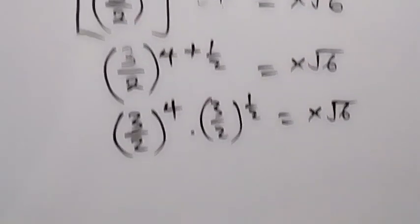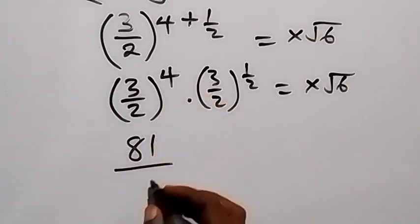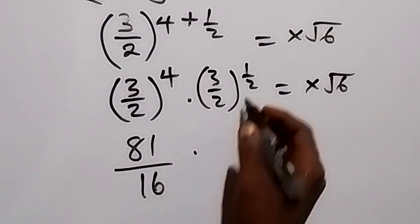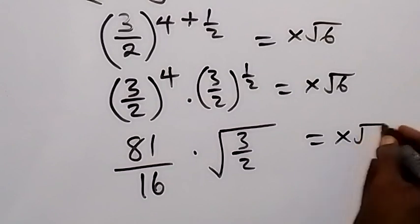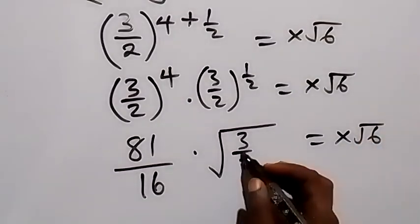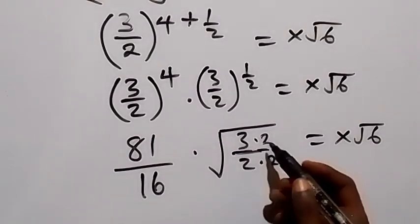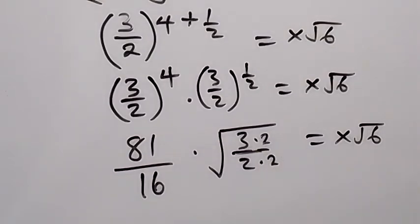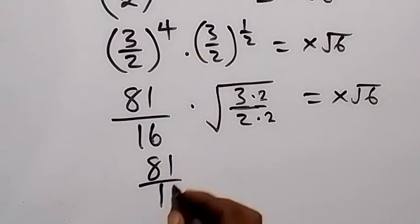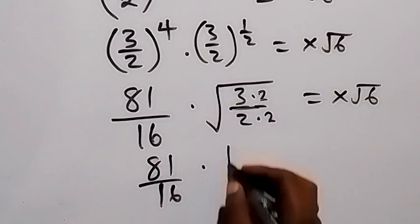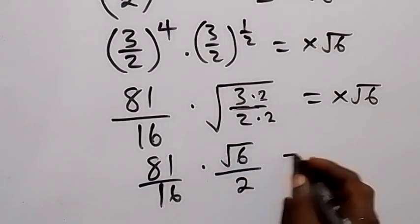We multiply numerator and denominator by 2 to form equivalent fractions. From here we can write this, and it will be 81 over 16, multiplied by root 3 over — the denominator becomes root 4, that's 2 — equals x root 6.